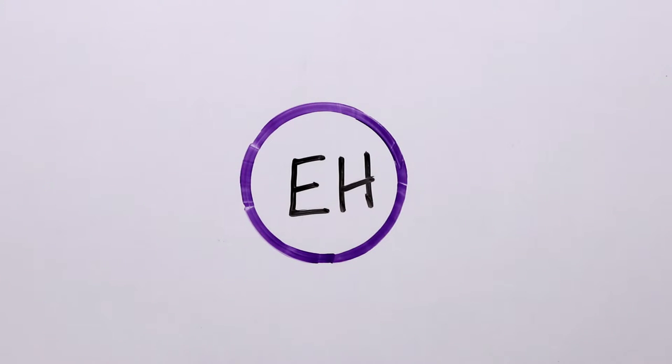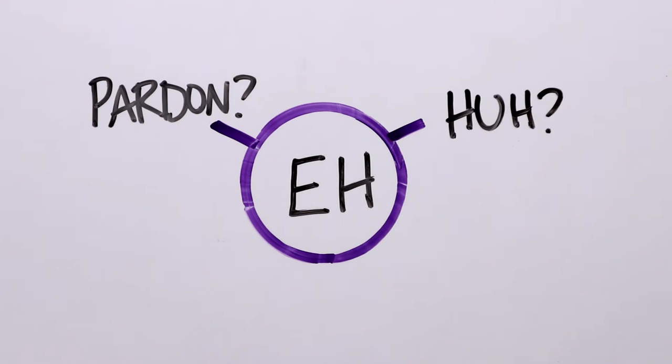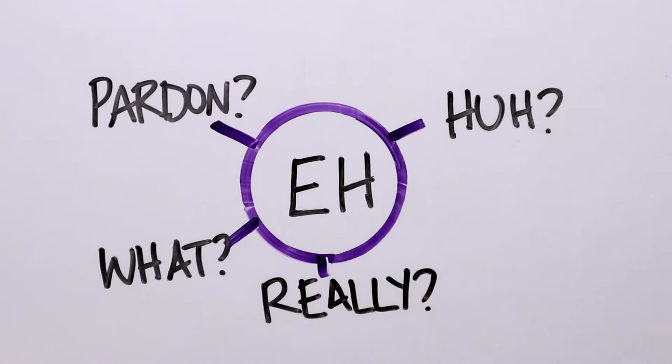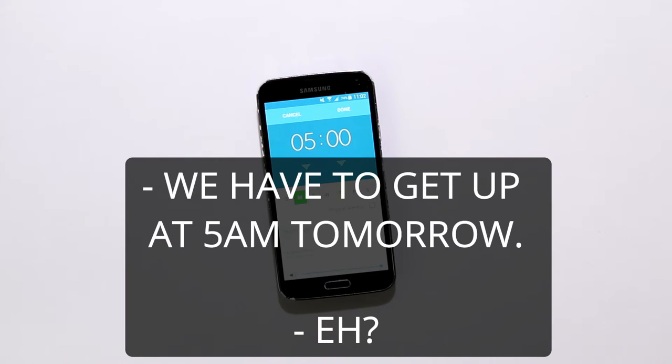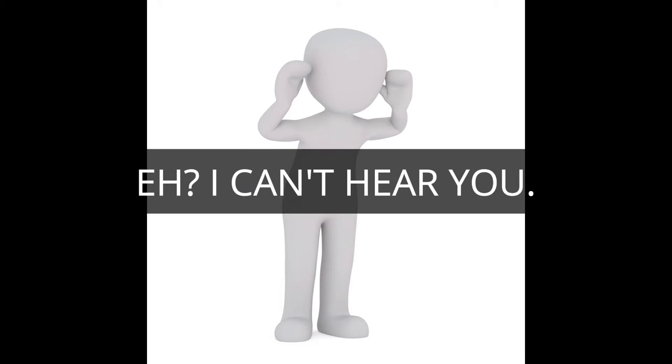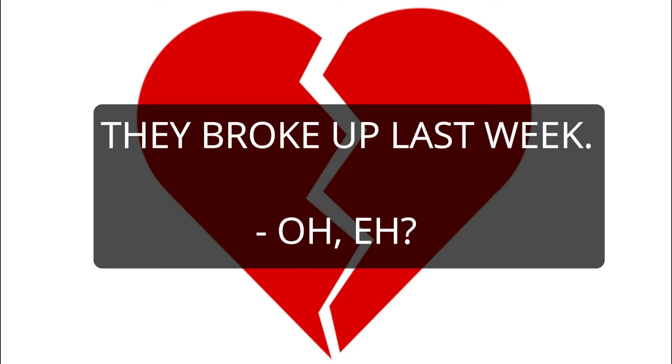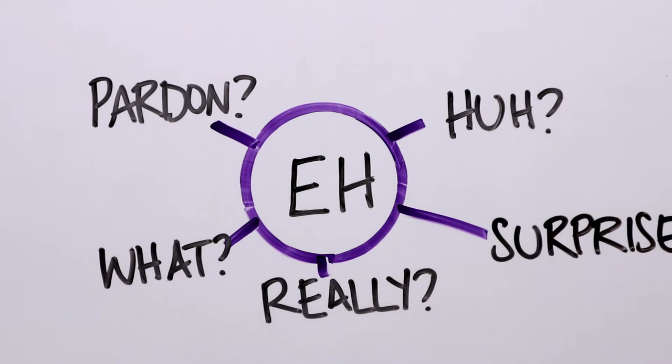You can also use the word eh by itself. This usually means pardon? Huh? What? Really? Or it shows that the speaker is surprised. We have to get up at 5am tomorrow. Eh? I can't hear you. They broke up last week. Oh, eh? In general, to say eh by itself instead of pardon is very casual, so it's best to use it in situations with people that you're close with.